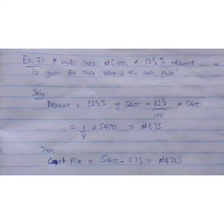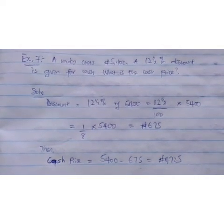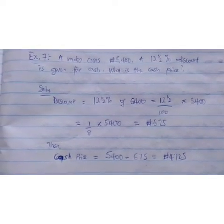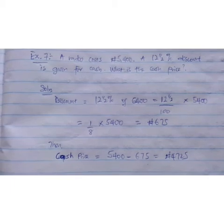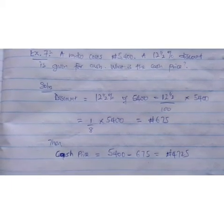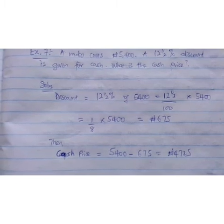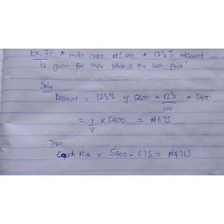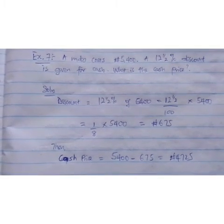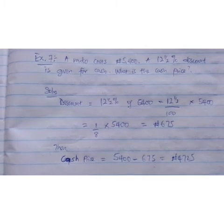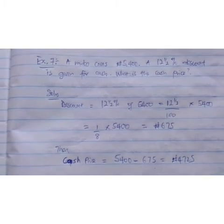Example 7: A radio costs 5,400 naira. A 12.5% discount is given for cash. What is the cash price? Solution: Discount equals 12.5% of 5,400, which is 12.5 over 100 times 5,400, which equals 1 over 8 times 5,400, giving us 675 naira. Cash price equals 5,400 minus 675, which is 4,725 naira.